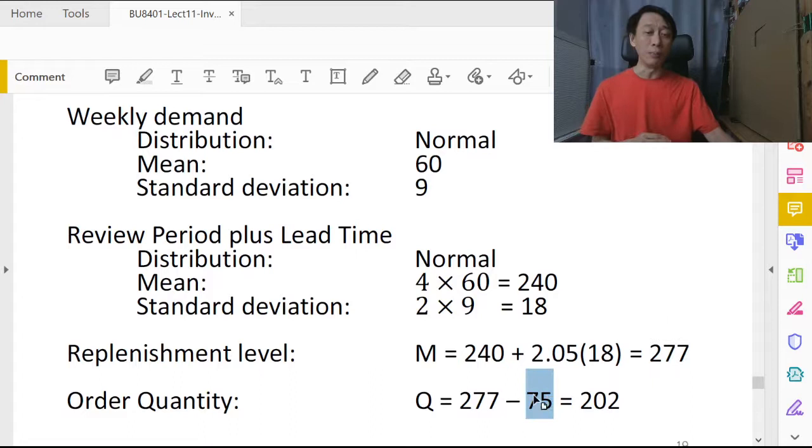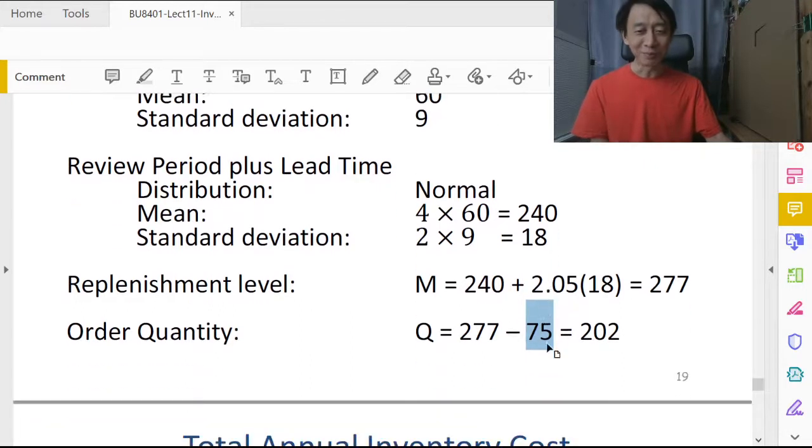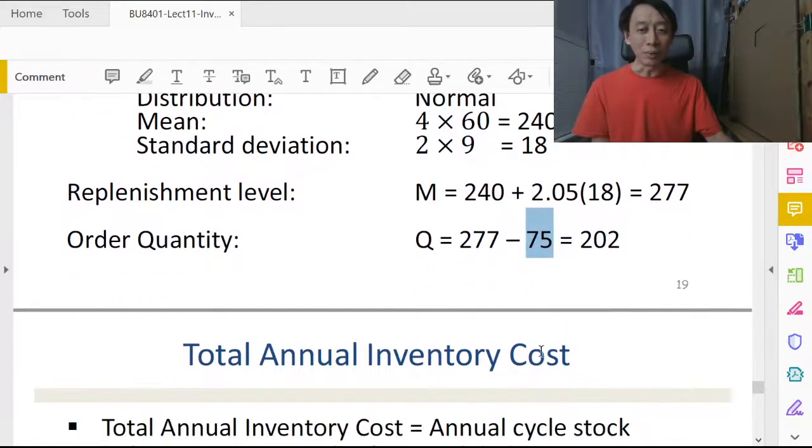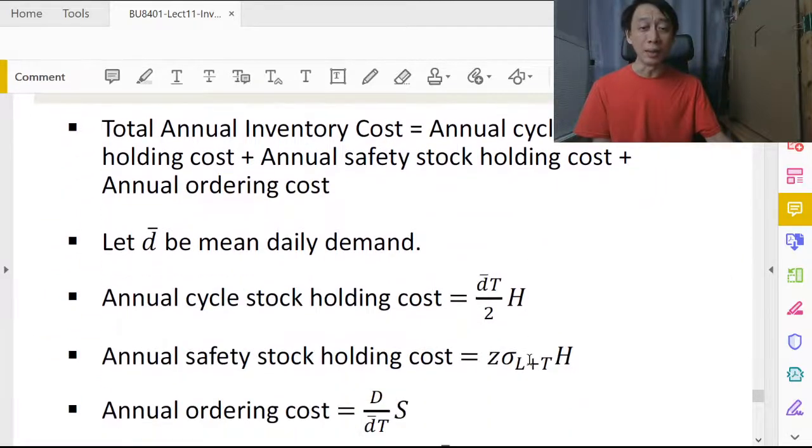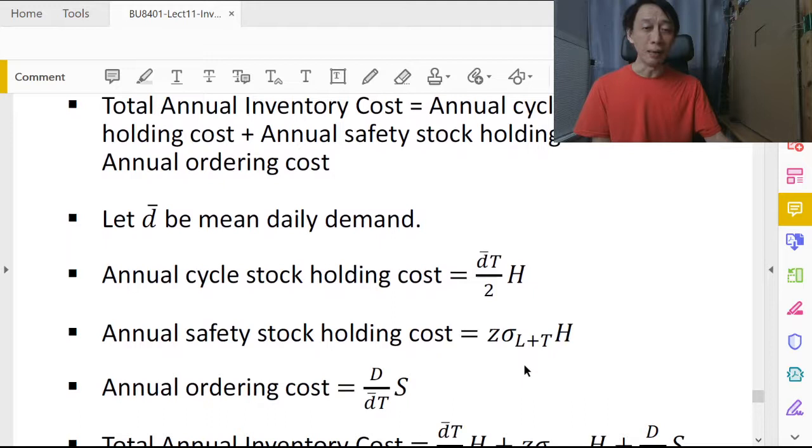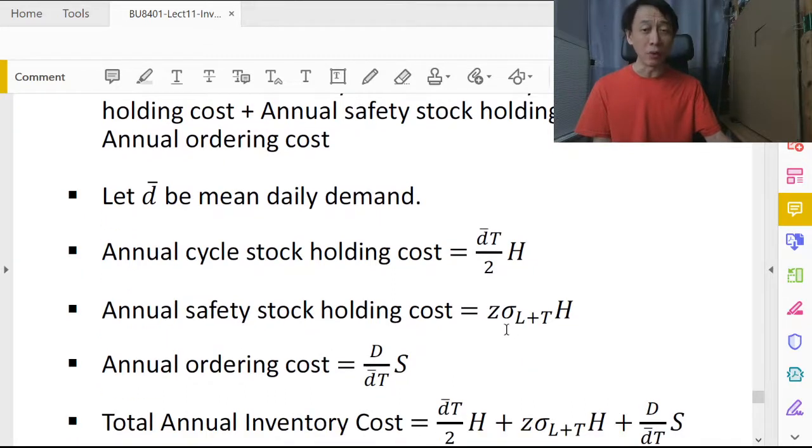Having calculated the target inventory level, we subtract our present inventory to get 202. So we should order 202 toothbrushes, or ace brushes. What about the annual cost? Annual cost is having the same formula. The components, first of all, are the same. That is the annual setup cost.